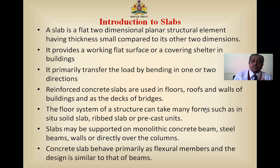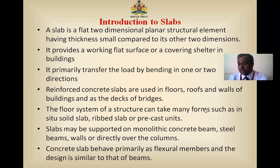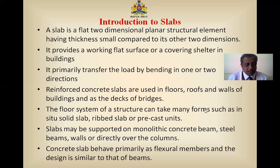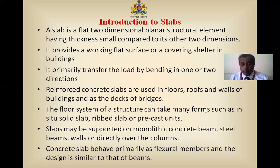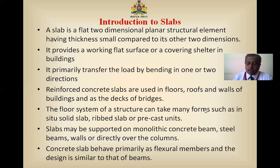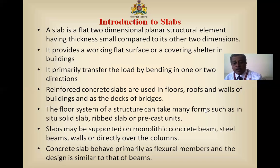Likewise, we can have varieties of slabs — different kinds of materials are being used in practice. A light material is also used as separation slabs. The slab may be supported on monolithic concrete beams, steel beams, or rested directly on walls. It can be simply supported, partially fixed, completely fixed, or a continuously supported element.